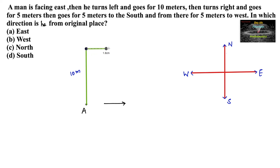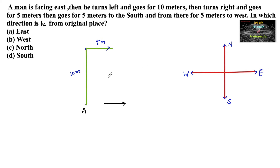He is now moving east for 5 meters. Then he goes 5 meters to the south. He is facing east, and taking 5 meters to the south means he is taking a right turn downward toward the south.